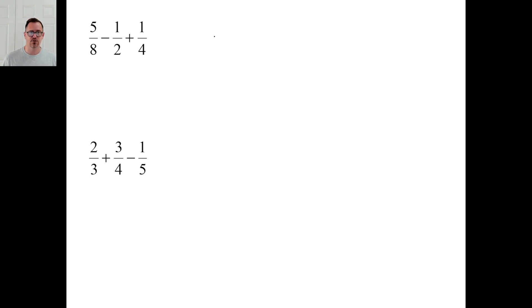Alright, 5, 8, 2, and 4, they all go into 8. 5 eighths stays the same. Minus 4 eighths plus 2 eighths. So that's going to be 5 eighths minus 4 eighths, 1 eighth plus 2 eighths, 3 eighths. Pause it and try D.